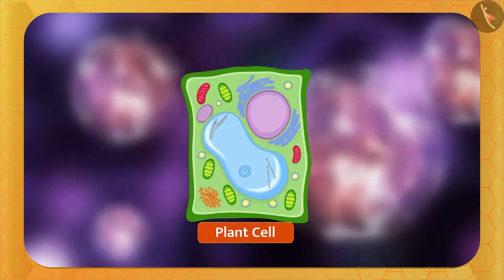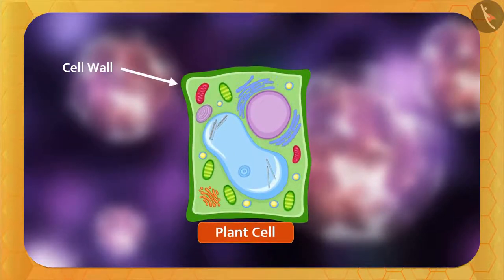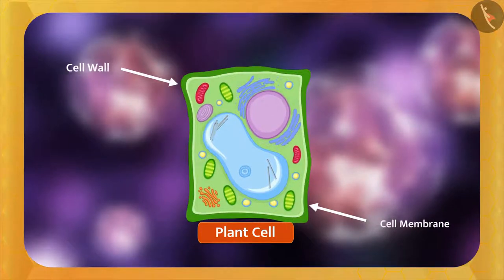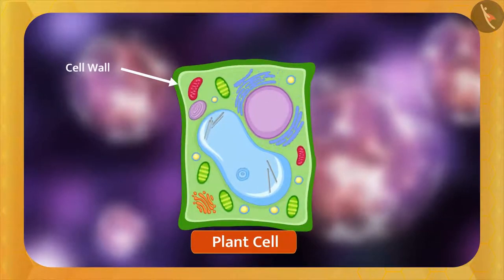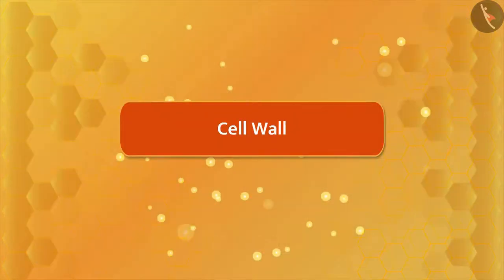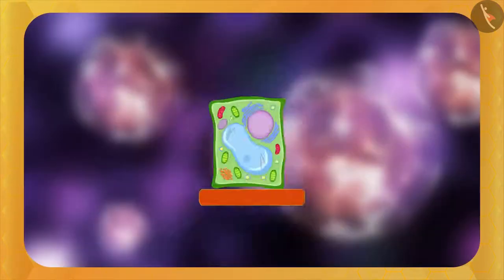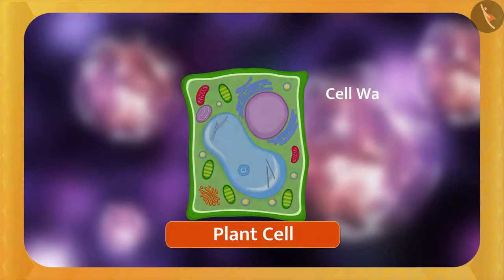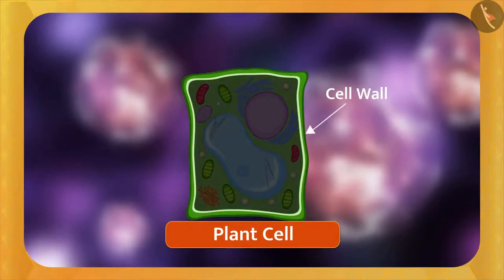The cell envelope is made up of the cell wall and the cell membrane. First, let us understand what is a cell wall. The cell wall is the outermost layer and it is present only in the plant cell — it surrounds the entire plant cell.